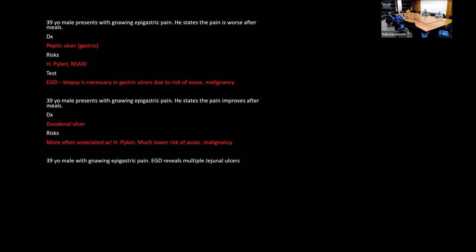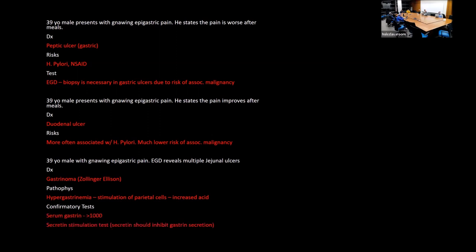If EGD reveals multiple jejunal ulcers in a patient with epigastric pain — think Zollinger-Ellison syndrome. You get hypergastrinemia stimulating parietal cells and increased acid. Jejunal ulcers shouldn't normally occur, so their presence signals something is wrong. Diagnosis: serum gastrin greater than 1000, and secretin stimulation test — normally secretin inhibits gastrin, but in ZE syndrome it paradoxically stimulates gastrin.